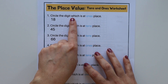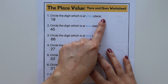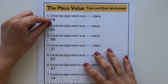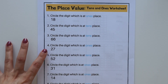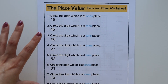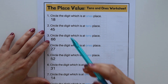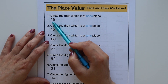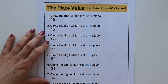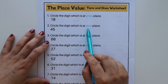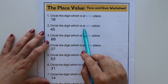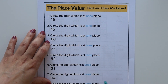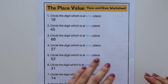Now I am sharing a few worksheets. After introducing the concept to the child, you can practice these worksheets. The first worksheet says: circle the digit which is at the ones place. I have written two-digit numbers and the child has to circle the digit at the ones place. For example, 4 is at the ones place. You should practice this worksheet with the child for 2 to 3 days.